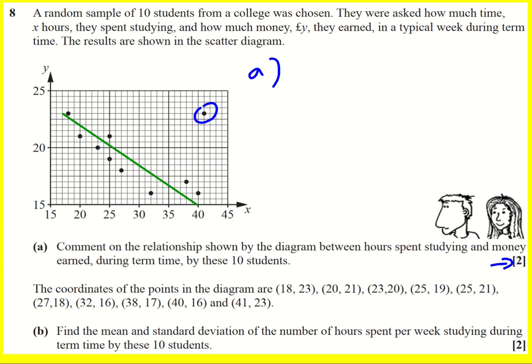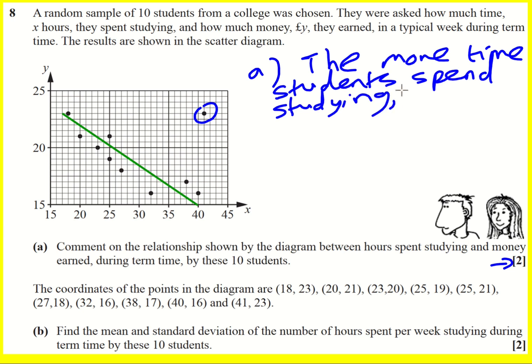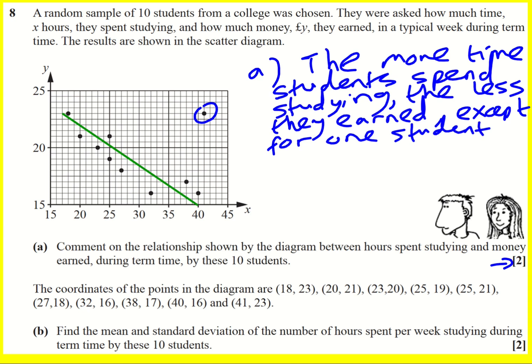So the sort of thing that you're looking for is, and I wrote it in words, you could say negative correlation but the more time students spend studying, the less they earned, except for one student. So I felt like that quite nicely summarizes the general trend. We could even say negative correlation, but I'll leave it like that.